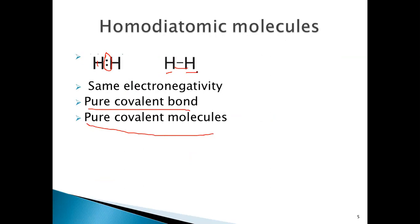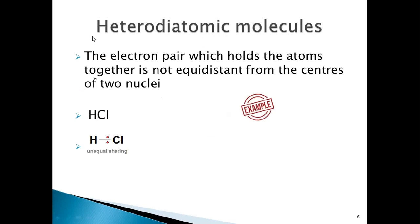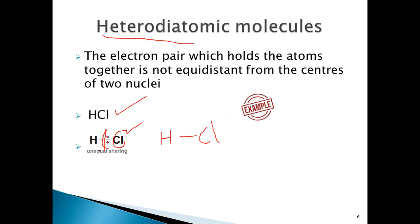The two atoms sharing the electron pair are of the same electronegativity because they are of the same type. When we go to hetero diatomic molecules, for example HCl, the electron pair is shared unequally between the two atoms. The pair of electrons is slightly shifted towards the chlorine atom — it is not exactly at the center, not equidistant from the two nuclei.